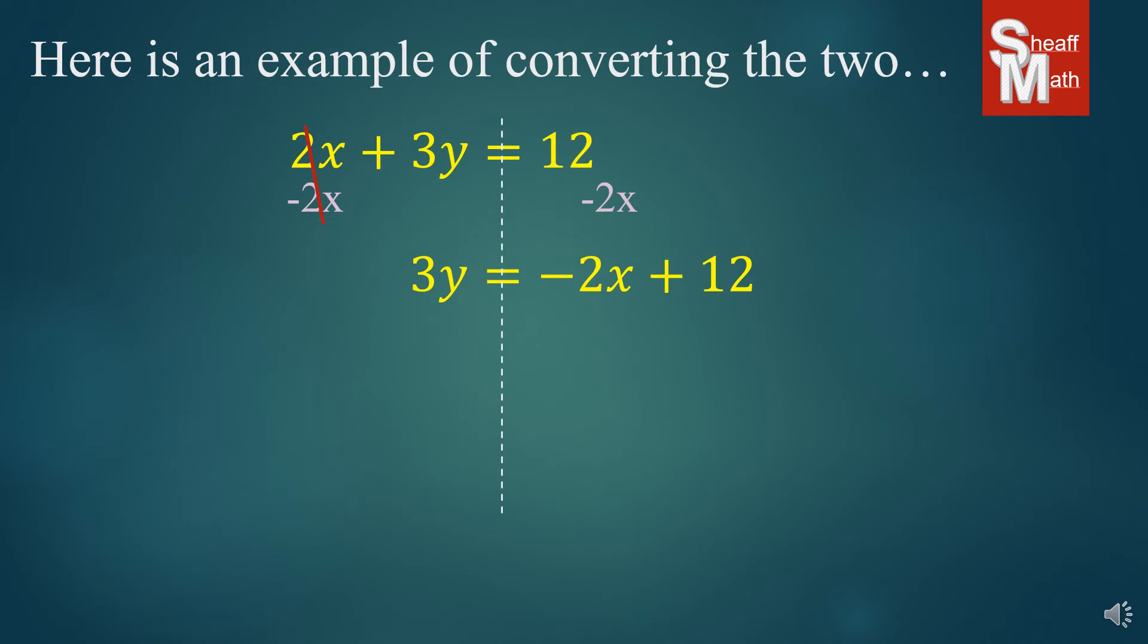You might notice that first off, the 12 and the -2x are not combinable. They are not like terms. I put the -2x before the +12 because that's the form that we're going for, y = mx + b. Now we're going to divide by 3 on both sides, and so that means we divide everything by 3. So that cancels this out.